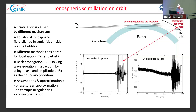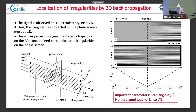We use backpropagation, which is solving the wave equation in a vacuum by using phase and amplitude at the receiver as boundary conditions. It's quite simple in principle, but when it comes to practical implementation, there are nuances. We need the following approximations: irregularities must be approximated by a phase screen, they must be significantly anisotropic, and their orientation must be known. These last two requirements exist because the signal is observed on a one-dimensional trajectory, meaning backpropagation can only be two-dimensional — we cannot solve the three-dimensional problem; it's underdetermined.